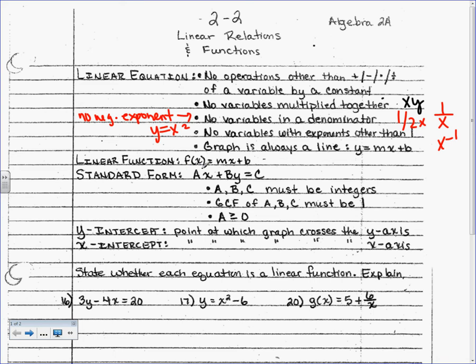A linear function is written as f(x) = mx + b. Remember, f(x) just means a function and it replaces your y. Standard form is a different way to write a linear equation — different from slope-intercept form or point-slope form. Standard form is Ax + By = C, where you have x and y on one side of the equation and the constant on the other.